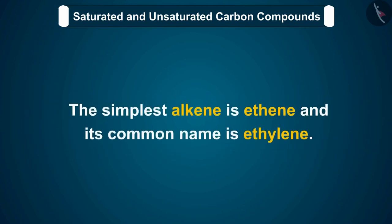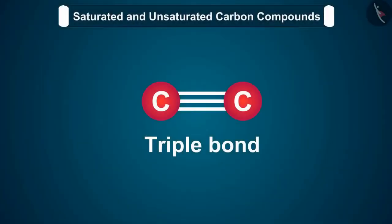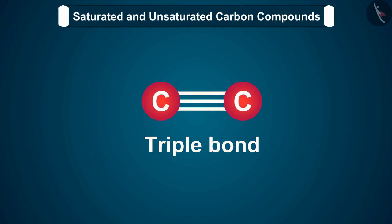The simplest alkene is ethene and its common name is ethylene. Let us now discuss about the alkynes. These are unsaturated hydrocarbons in which the two carbon atoms are connected by triple bonds. The alkynes contain a triple bond between carbon atoms which is formed by the sharing of three pairs of electrons.